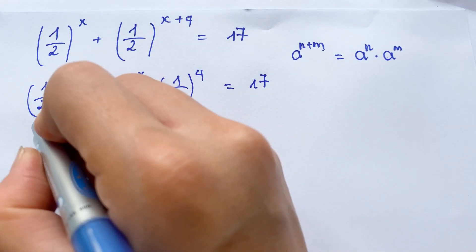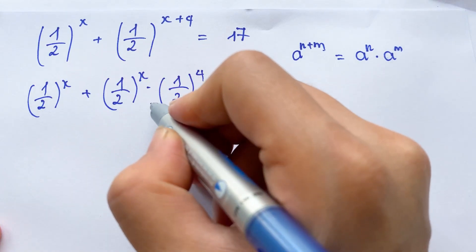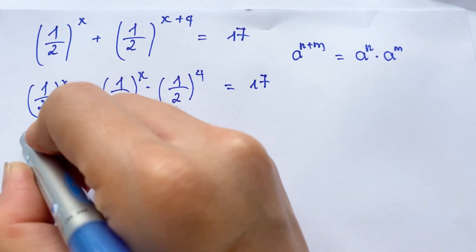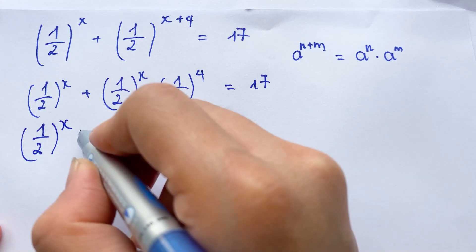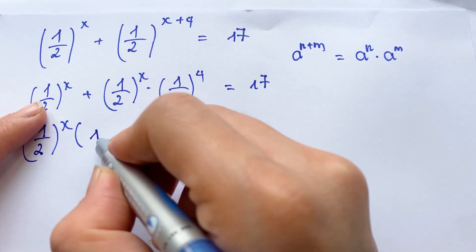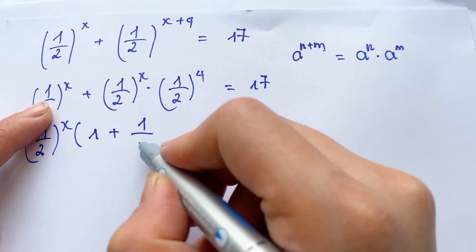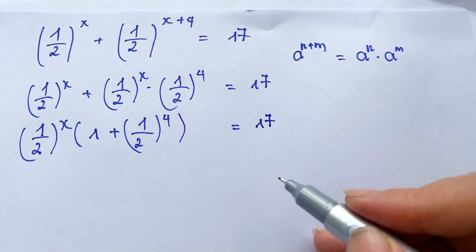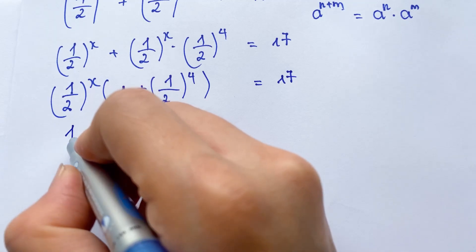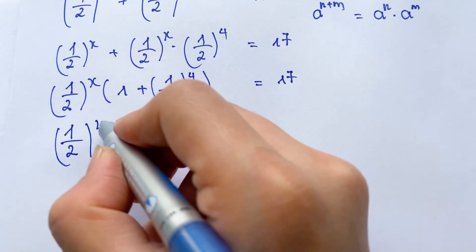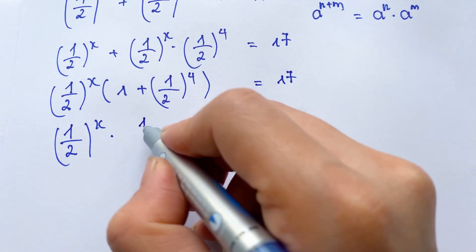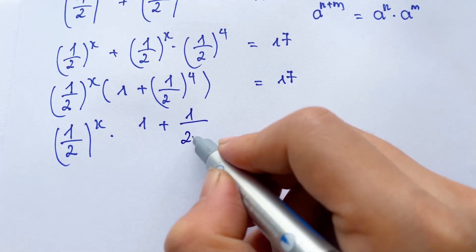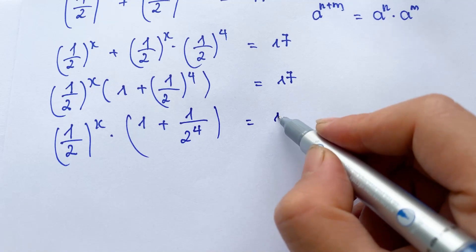And then, everyone look at that — we have a^(1/2)^x as a common factor. Therefore, you need to take it out: (1/2)^x times, in brackets, 1 plus (1/2)^4 equals 17. So you can say (1/2)^x times 1 plus (1/16) equals 17.